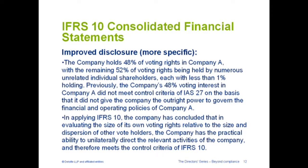The remaining 52% are widely held and no one has more than 1%. Previously the company did not think it met the control criteria under the old standard, but under the new one they do believe they have the outright power to govern the policies, and therefore they are consolidating because they believe they have the unilateral right to direct all activities. This provides more information behind the thinking as to how management assessed control — greater information on the judgments, more insight, not just information.